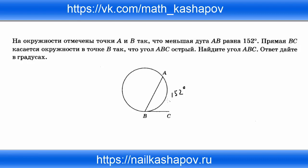Для того чтобы решить данную задачу, нам нужно отметить центр окружности — точку O. Соединим центр окружности с точками A и B. У нас получается равнобедренный треугольник OAB.